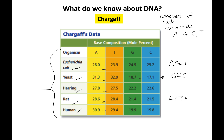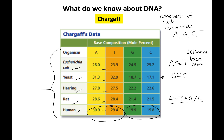A always approximately equaled T, and G always approximately equaled C across organisms. This pattern would determine base pairing: A pairs with T and G pairs with C. This makes sense because there are two strands of DNA — on one strand is A, and on the other is T, and likewise for G and C.